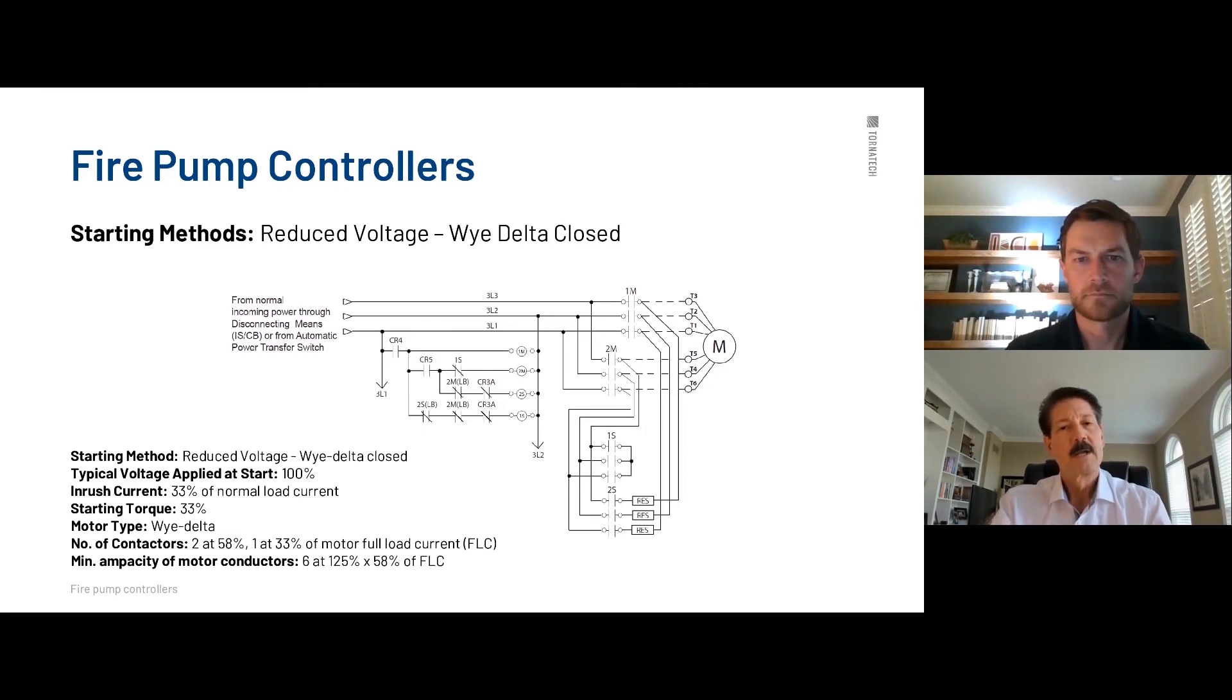I'll move a little quicker here. Y delta closed. Here's your resistors. Very simple. What we do is we have reduced voltage and it's running through a set of resistors, which reduces the voltage as you see into the motor itself. And then we transition. Primarily what happens with the resistors again, they stay in the circuit and it's called a closed transition. So the motor leads never, ever, ever have an open circuit, an open voltage, or I should say, no voltage.